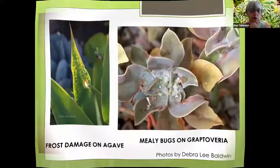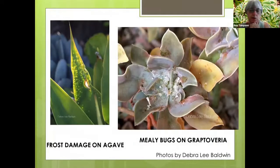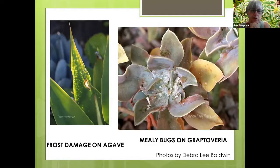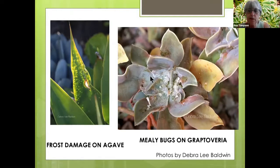Here are slides of different kinds of damage you'll see on your succulents. The first is frost damage on an agave attenuata — this agave is very frost tender, so keep it protected during cold winter mornings. Here you can see mealybugs on Graptoveria — they pierce into the skin, suck the juices out of the succulent, and create permanent damage.